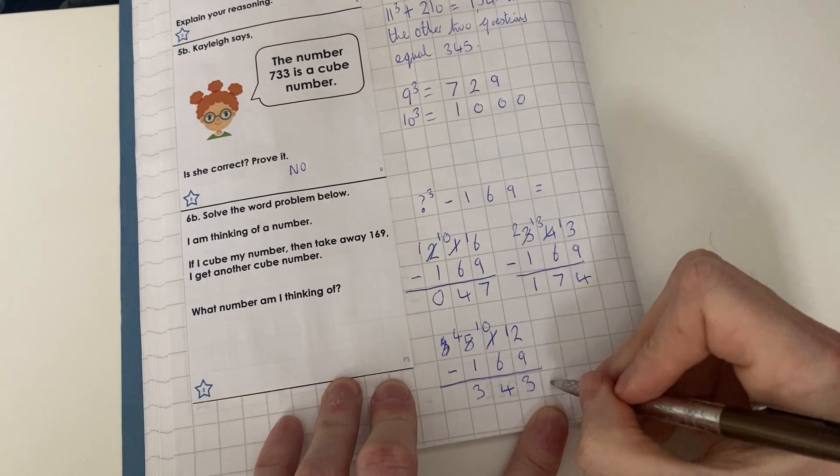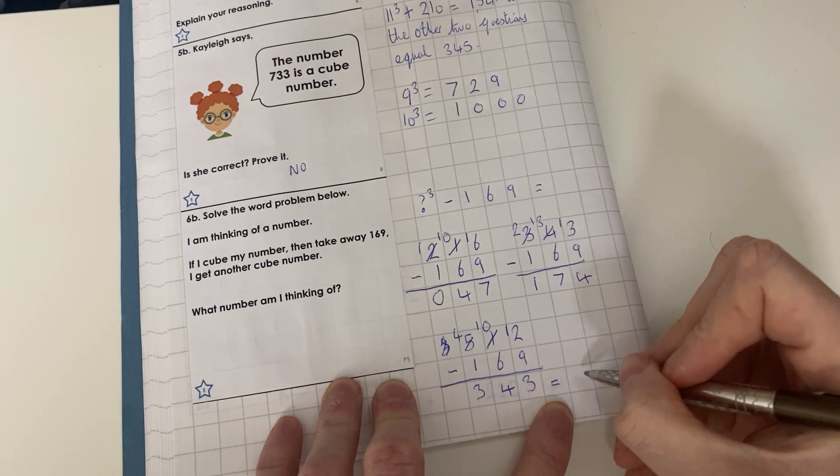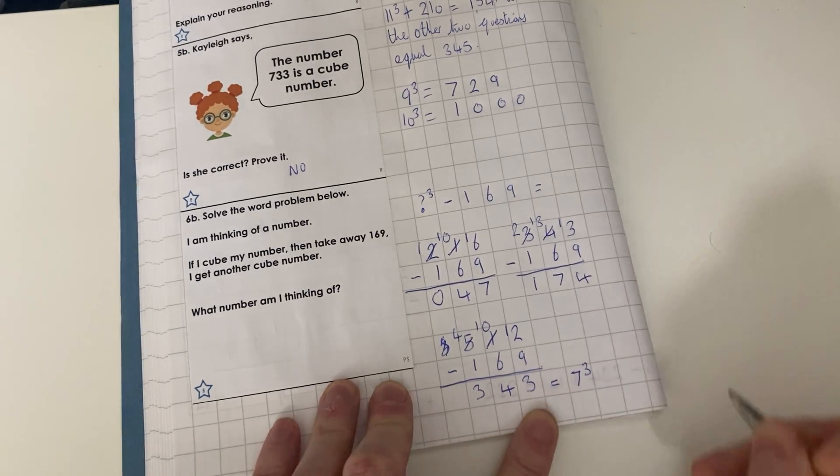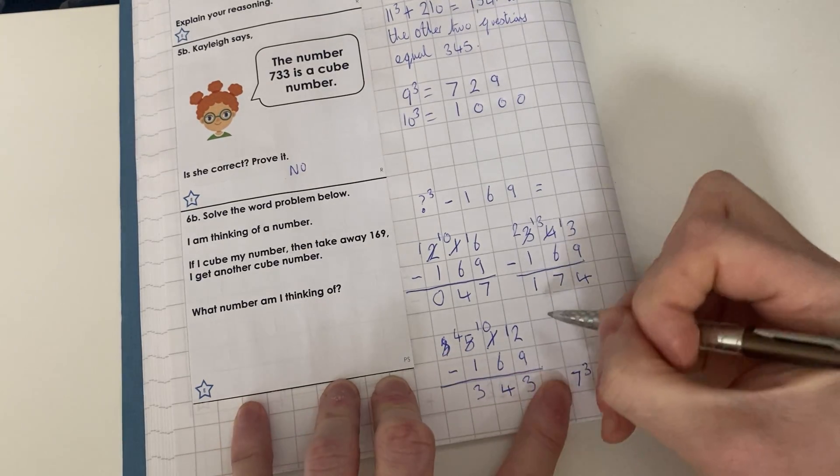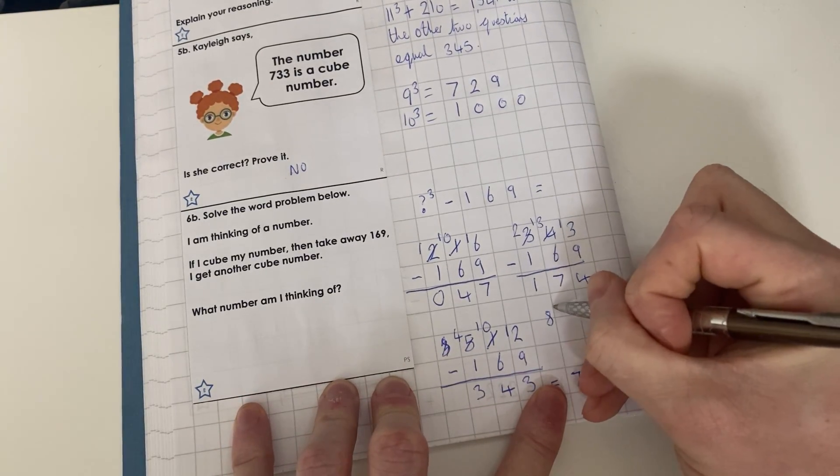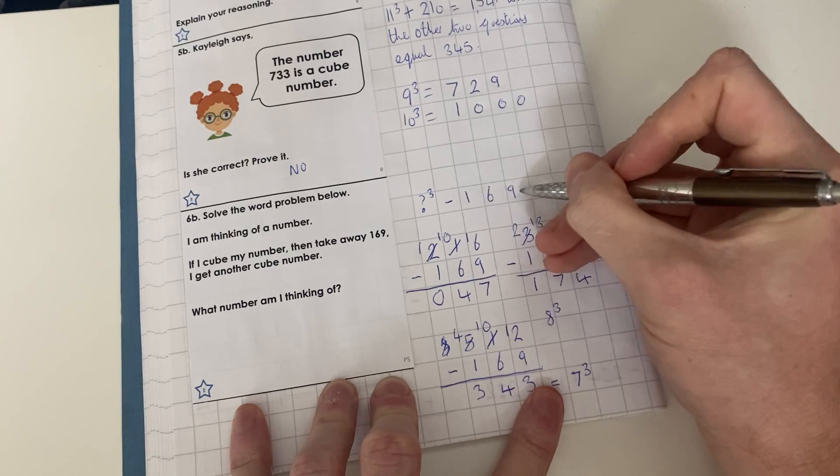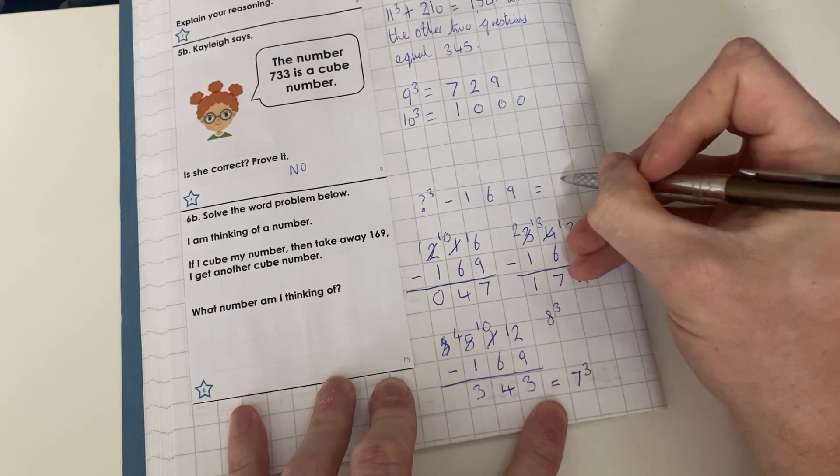So we know our missing number, because this is our starting number. So 8³ - 169 = 7³. So our starting number was 8.